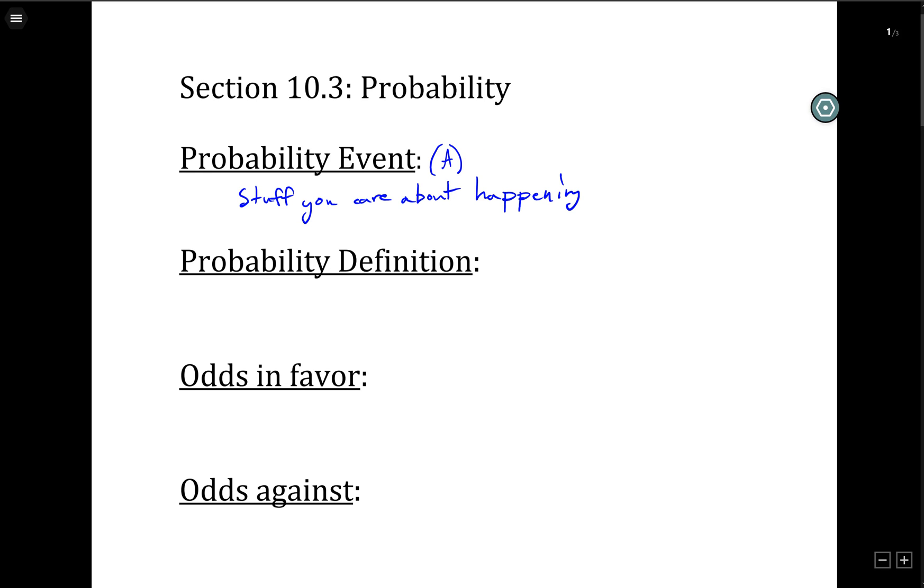So our definition for probability is the stuff in A, in other words, the stuff we actually care about happening over the total stuff. And I'm using very intuitive definitions, because I think this just kind of makes sense. Like, for example, if I want to roll a six, there's only one way that can happen. But there are six total ways I can roll the die. So one out of six.